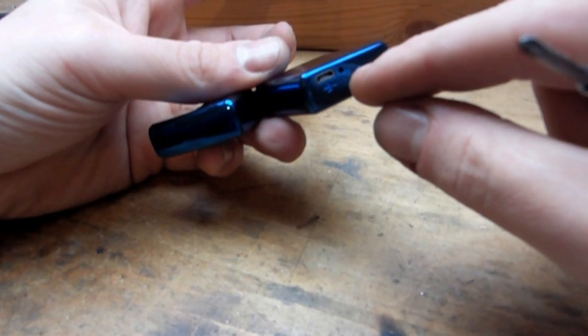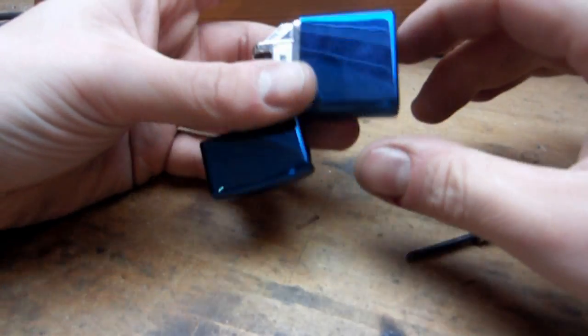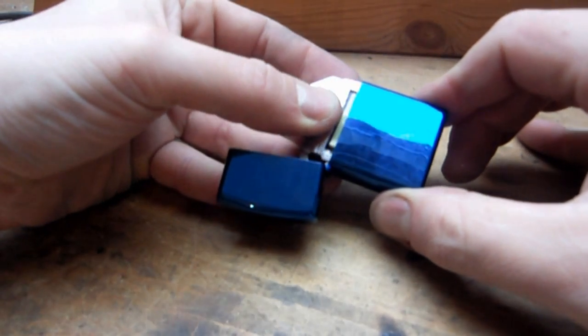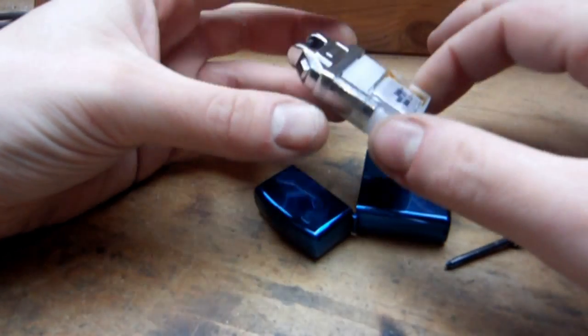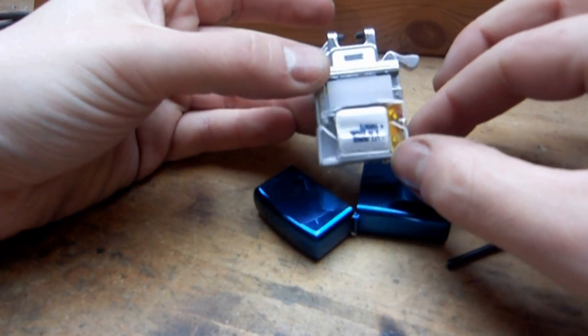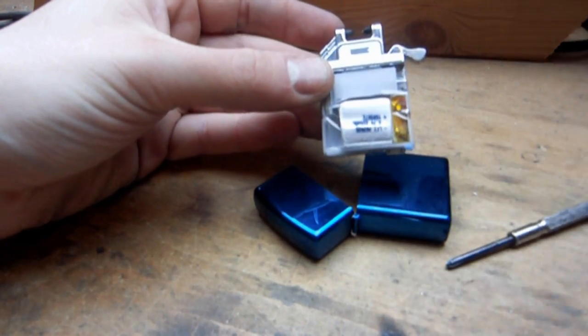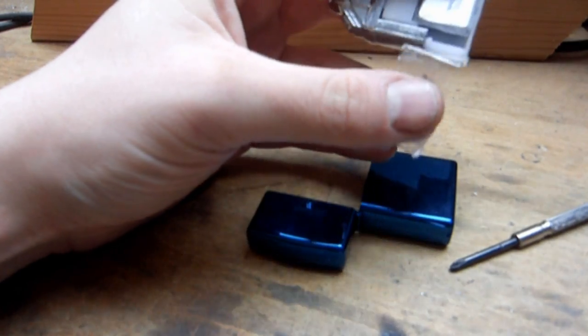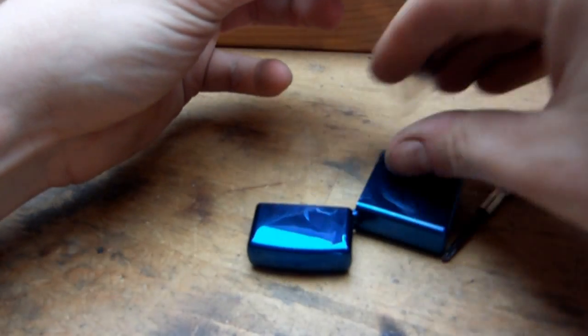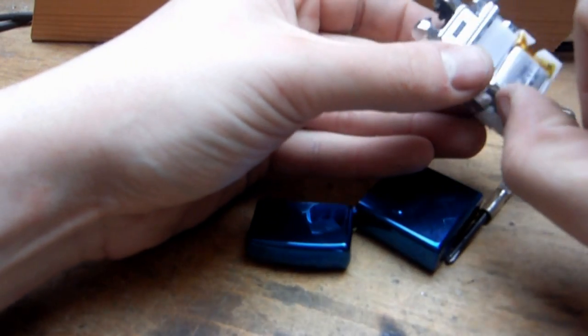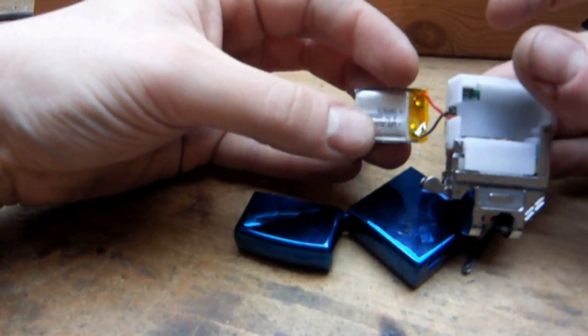First step you remove the tiny screw in the rear then you can pull out the inside. Carefully peel off the tape just remove the part sitting on the battery and now we have the battery out.